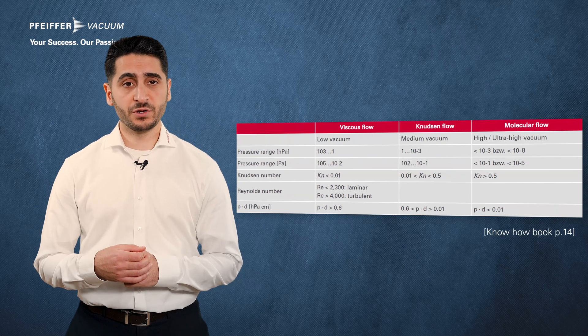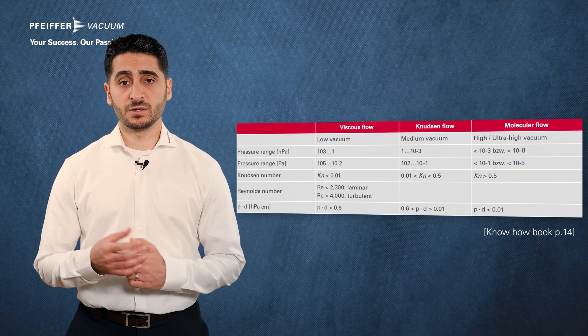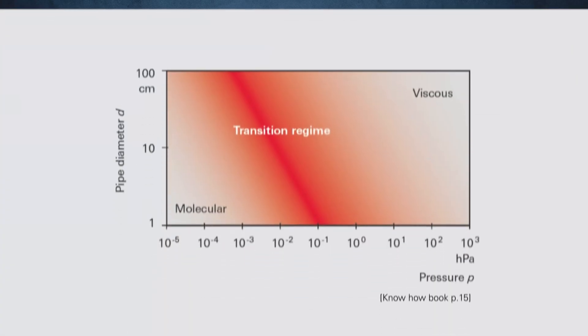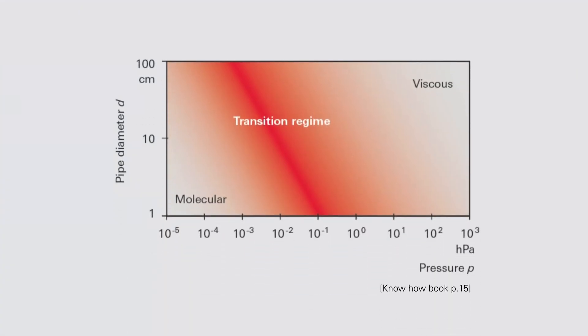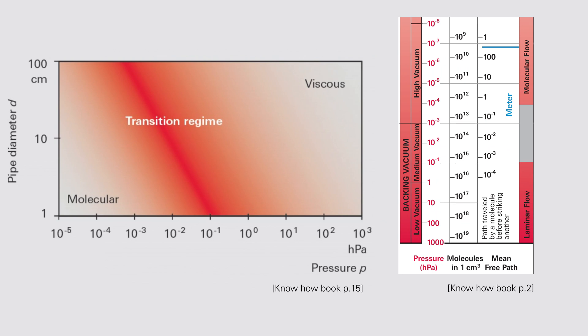At Knudsen numbers greater than 0.5, molecular interaction virtually no longer occurs and what prevails is molecular flow. This graph shows an overview of flow ranges as a function of the product of pressure and component diameter. Although classification into vacuum ranges purely according to pressure is in common usage, this graph clearly shows that this classification is actually an inadmissible simplification.